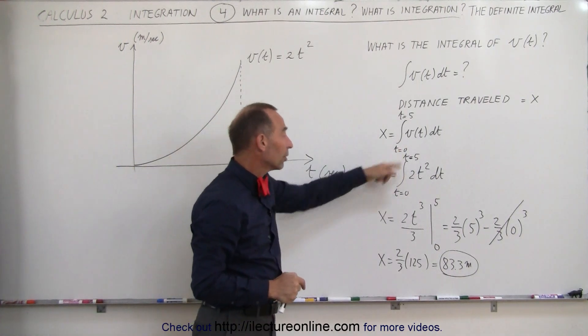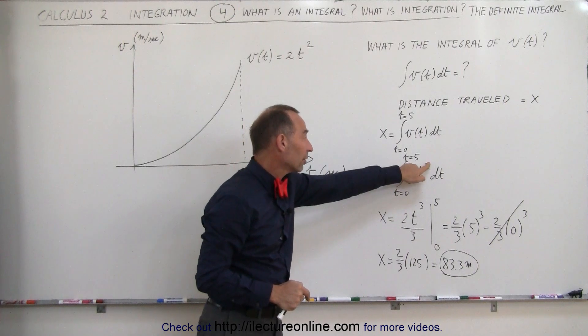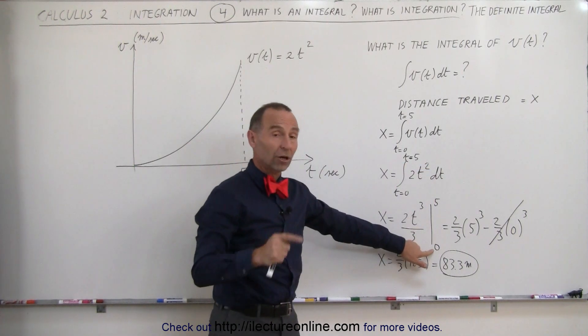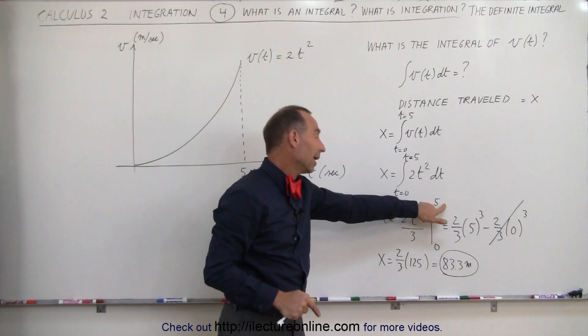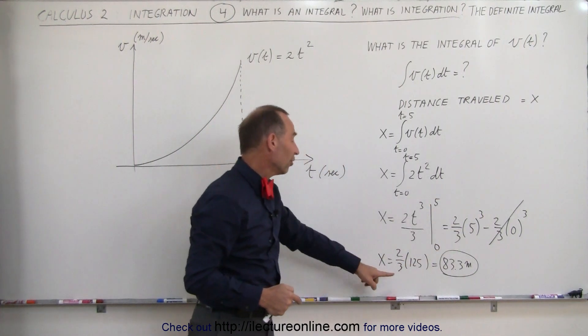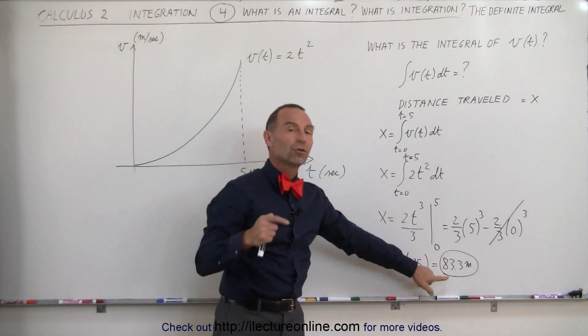And if we then take the integral of the function, which means add 1 to the exponent divided by the new exponent, and then evaluate it from the starting point, time equals 0, to the end point, time equals 5 seconds, we plug in those limiting values, we then get the distance traveled.